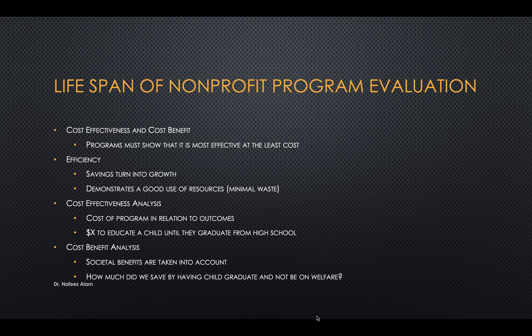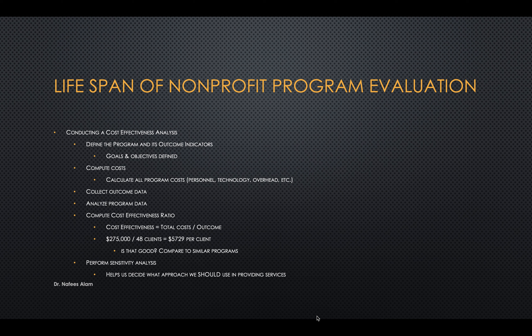Cost effectiveness analysis takes into account the cost of a program in relation to outcomes — for example, X number of dollars to educate a child until they graduate from high school. Cost benefit analysis takes societal benefits into account, asking how much we saved by having a child graduate and not be on welfare. In conducting a cost effectiveness analysis, you define the program and its outcome indicators, clearly define goals and objectives, then compute costs by calculating all program costs: personnel, technology, overhead, etc.